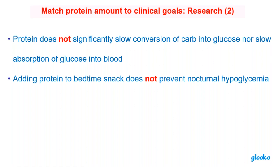Protein does not significantly slow the conversion of carb into glucose. People say we have to add protein at the evening snack before bedtime to slow that conversion — some cheese or peanut butter. That's not true. If the patient is going into low blood sugar in the middle of the night, they don't have enough carbs for their nighttime snack or they have too much medication coming in.